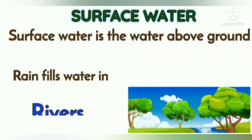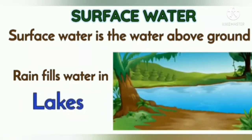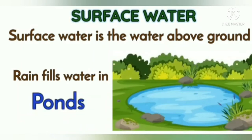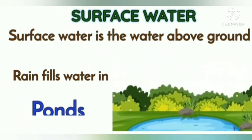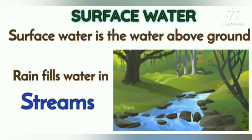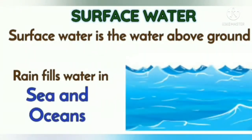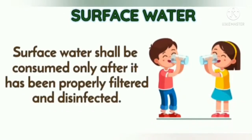Surface water is the water above ground — rain-filled water in rivers. Surface water includes water in rivers, lakes, creeks, ponds, and streams. Seas and oceans are also surface water. Surface water should be consumed only after it has been properly filtered and disinfected.